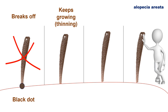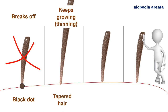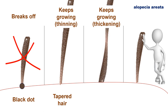It may happen that the hair keeps growing because the insult to the hair follicle is not so profound, and then it becomes thinner and thinner but never breaks off — and we call these the tapered or tapering hairs. The third option is that it keeps growing, our treatment was successful, and it becomes thicker again. There will be a constriction within this hair and then it grows normal again — and these are the so-called Pohl-Pincus constrictions.